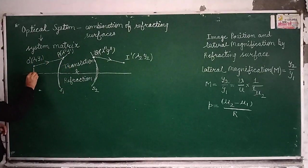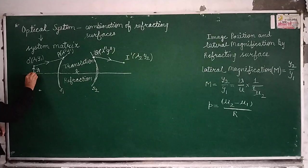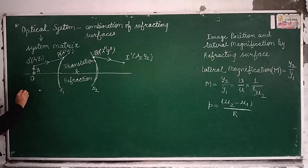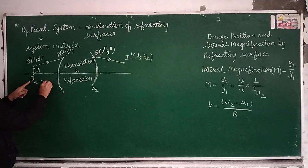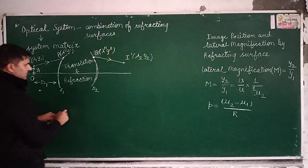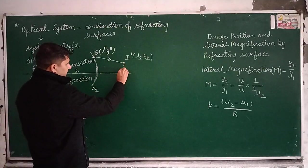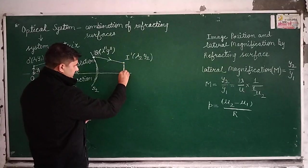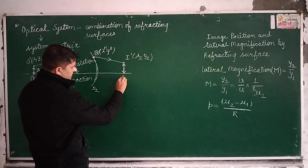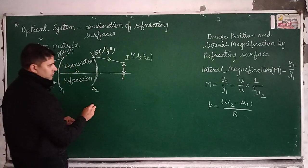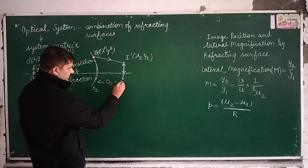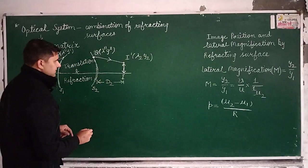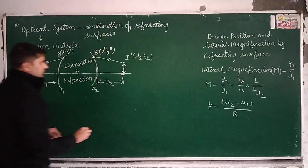After emerging at Q, the ray propagates through the final medium and forms an image at point I-dash, with optical coordinates λ2 and y2. O-dash is at a height y1 from the optical axis, and the object distance is denoted by d1. The corresponding image point on the optical axis is I, and the image distance in image space is denoted by d2.